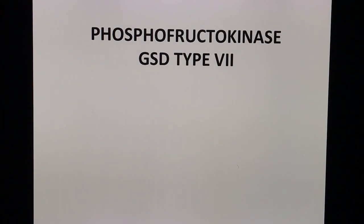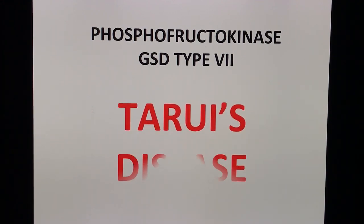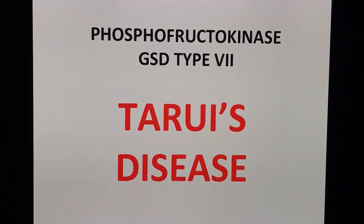Lastly, we have phosphofructokinase deficiency, which is glycogen storage disease type 7. This is known as Tarui's disease.